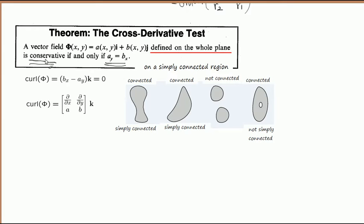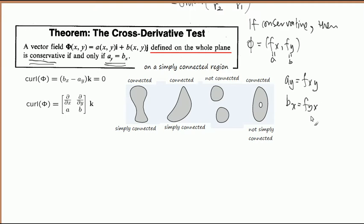If it is a conservative vector field, then it must be a gradient vector field, so phi is fx, fy. If it is conservative, this must be in that shape. So if it is so, this is your a and that's your b. And they ask you to test this one. So what is ay in that case? fxy, right? What is bx? fyx. Anybody remember the relationship between these two things? Yeah, that should be equal if it is a nice function, right? Continuous second partial, that must be equal. So if it is a conservative vector field, this interesting criteria must satisfy.